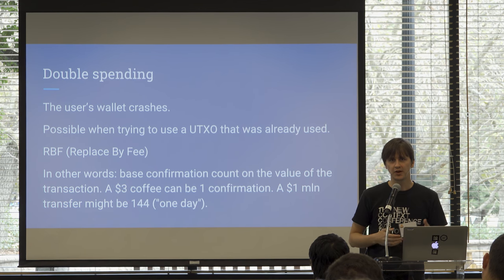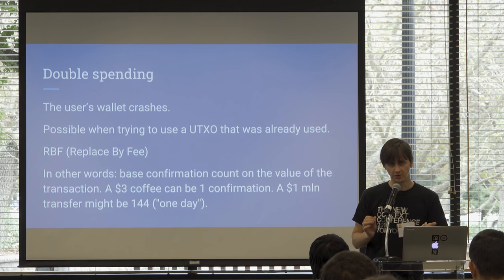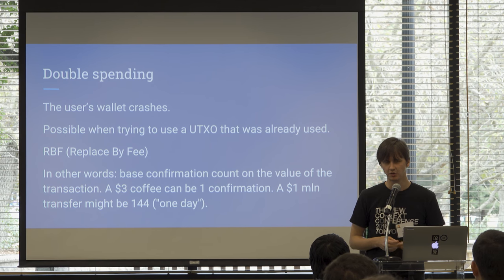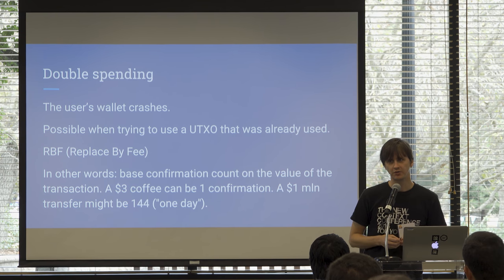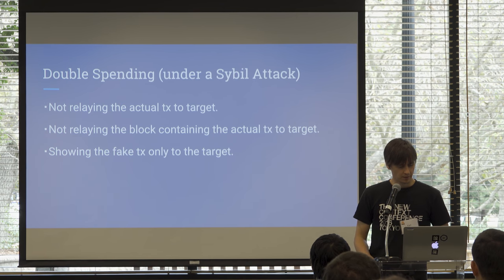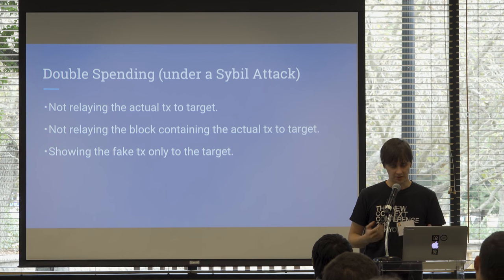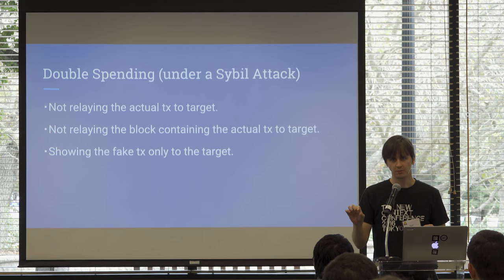All of this comes down to: if you're receiving Bitcoin, you want to base the required confirmation count on the value. If someone is paying three dollars for a coffee, waiting for one confirmation is probably fine — you might lose three dollars occasionally, but it won't happen often. But if someone is sending you a million dollars, you may want to wait a long time — maybe even a day, which is about 144 blocks. When a target is under a Sybil attack, double spending them becomes easier.